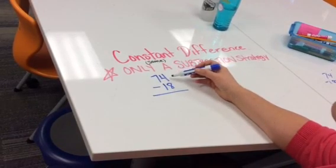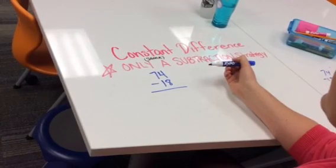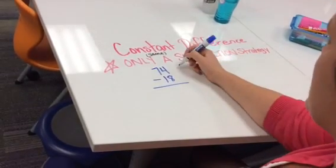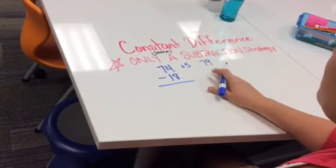If we have the equation 74 minus 18, using my knowledge of constant difference, I know that I can add 5 to get 79, which is a friendly number.